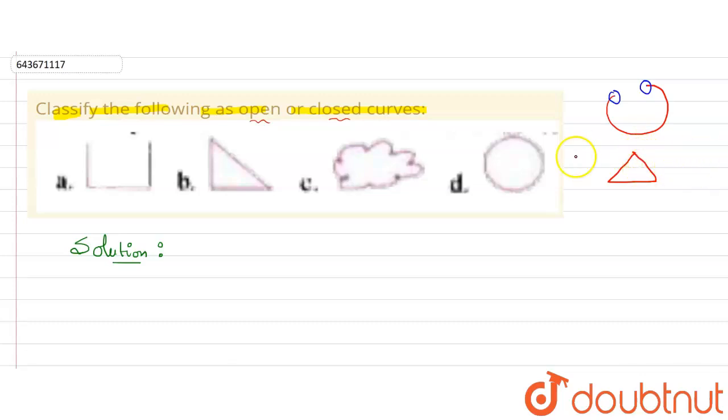Now come back to the question. Let's consider part A. Here you can see this is a half square, we are only having three sides and this upper space is blank, it is open. There are two endpoints, you can see first endpoint and second endpoint. If our figure is having two endpoints then it is an open curve, so part A is open curve.